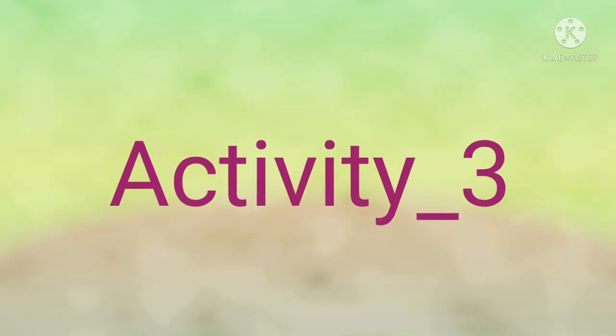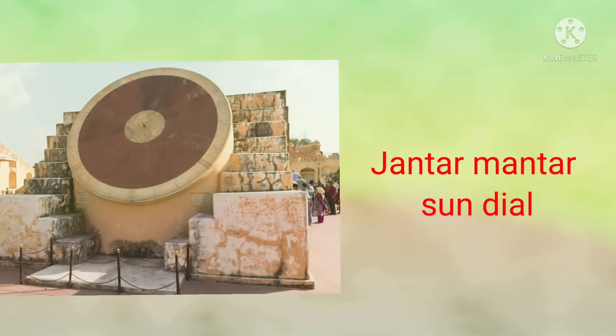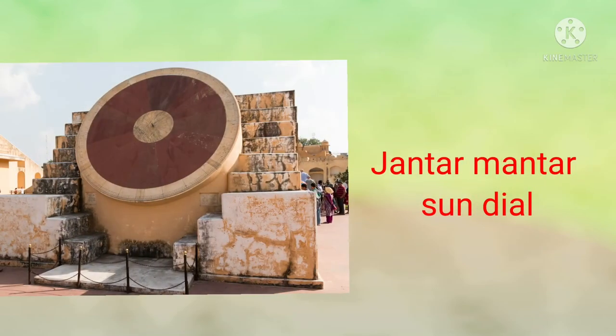Children, let us observe one more activity. Do you know what a sundial is? A clock based on shadows of an object due to sunlight is called a sundial. People in olden days used these sundials. Do you know the Jantar Mantar monument in Jaipur, Rajasthan state, is built by the Rajput king Sawai Jai Singh II? It features the world's largest stone sundial and is a UNESCO World Heritage Site.